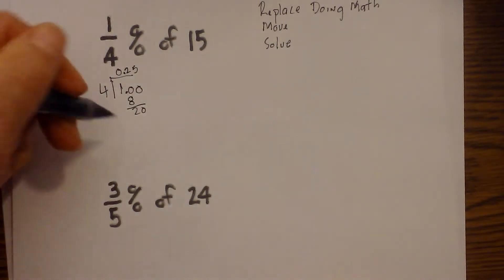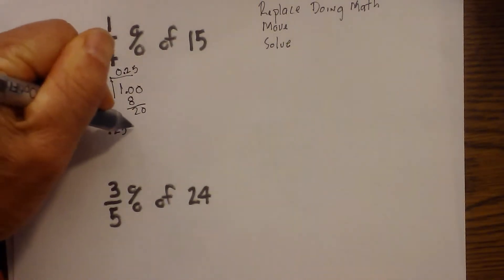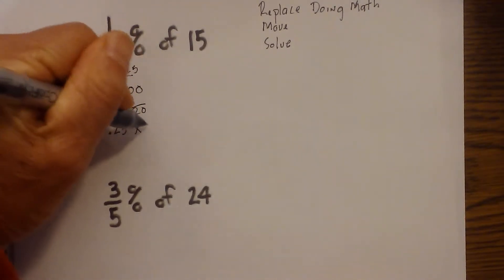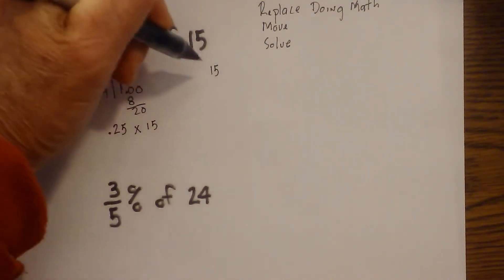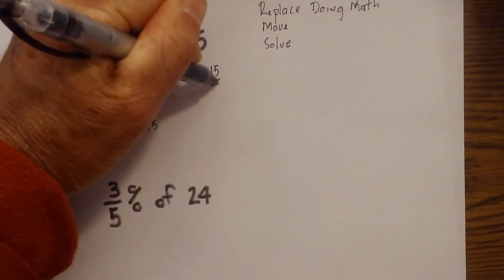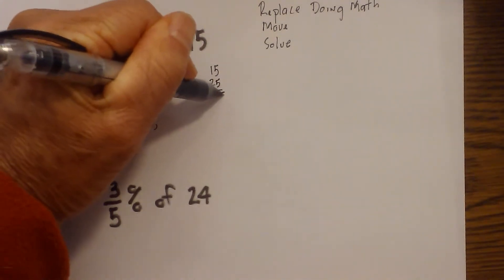I now just solve. So now I have 0.25 times, because remember I've replaced the of with a times 15. I'm going to rewrite this over here. And when you multiply, I just multiply and then add the decimal in later. 5 times 5 is 25. Carry the 2.